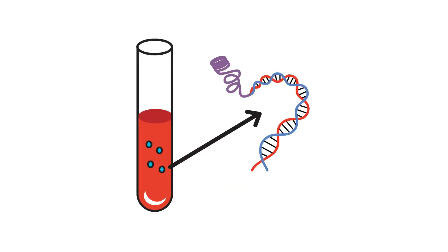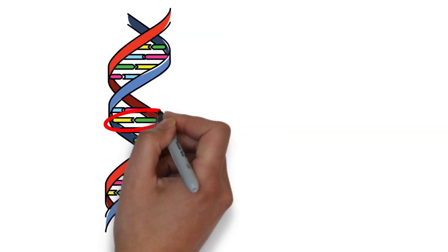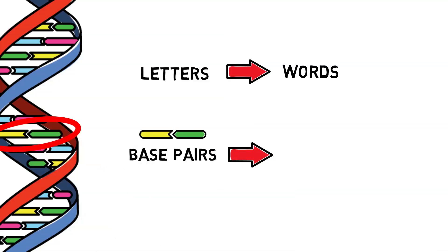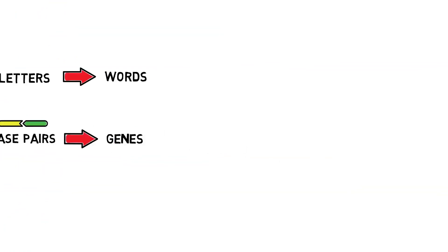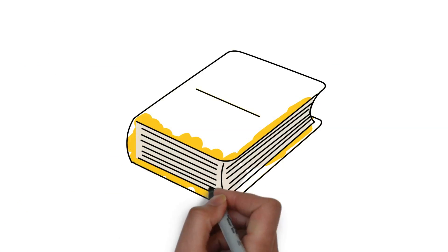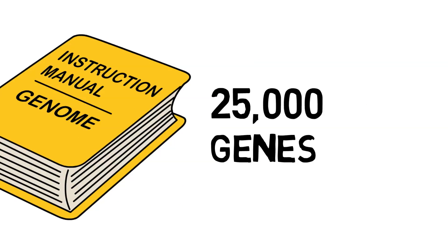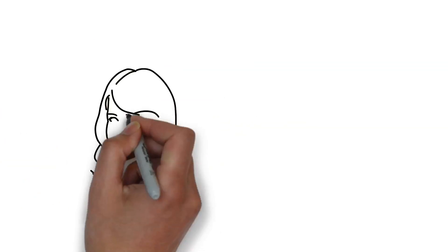So the blood sample that was taken from Jimmy contains cells with DNA that can be tested. Our genome contains about 3 billion base pairs. Base pairs are similar to the letters of the alphabet. The letters of the alphabet are arranged to make words, and base pairs arrange to make genes. The instruction manual, or genome, contains about 25,000 genes. Therefore, each cell of our body has all of these genes, or all of our genetic information.